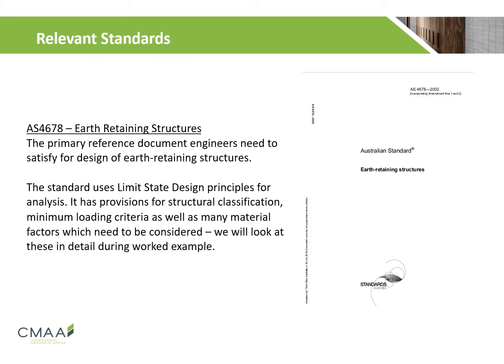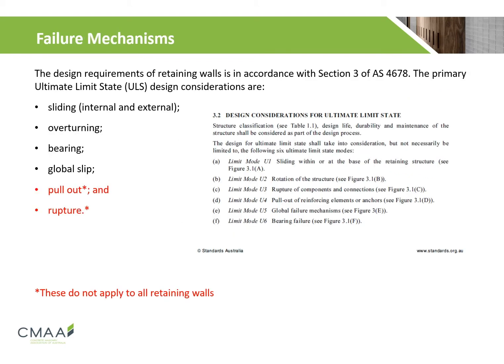For segmental retaining wall design, AS 4678 is the primary reference industry document required to be used. This standard sets out the requirements and recommendations relating to the design and construction of structures required to retain soil, rock and other materials. The design requirements are in accordance with section 3 of AS 4678, with ultimate limit state design considerations shown on screen. It should be noted that pullout and rupture are only applicable to soil reinforced retaining walls.